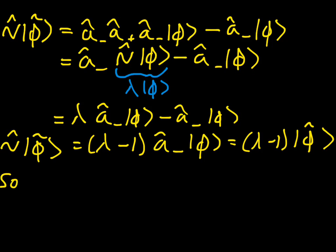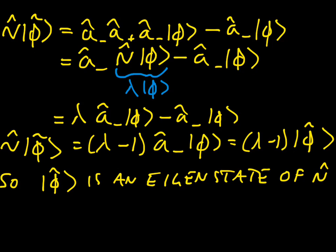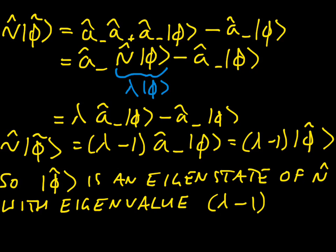So that means that phi tilde is an eigenstate of n, of the number operator n, with the eigenvalue lambda minus 1. That's rather useful. So what we've shown is, given one eigenstate of the number operator, we can generate a whole family of eigenstates of the number operator just by using the lowering operator.